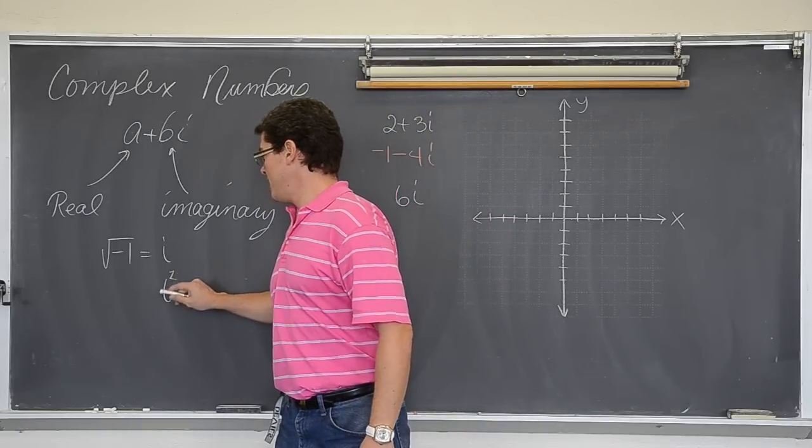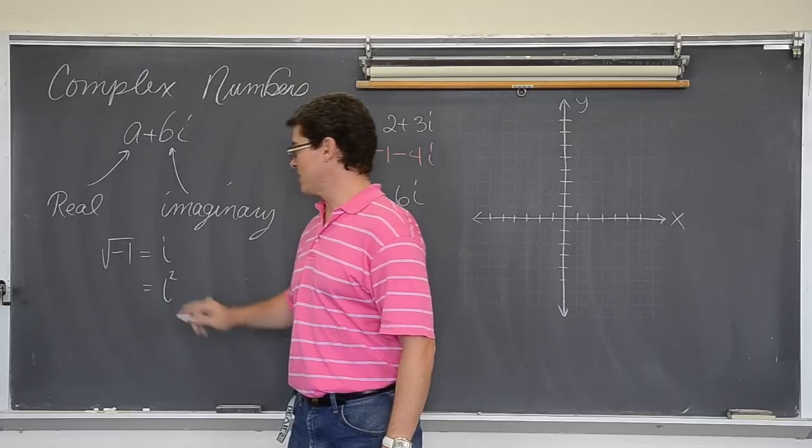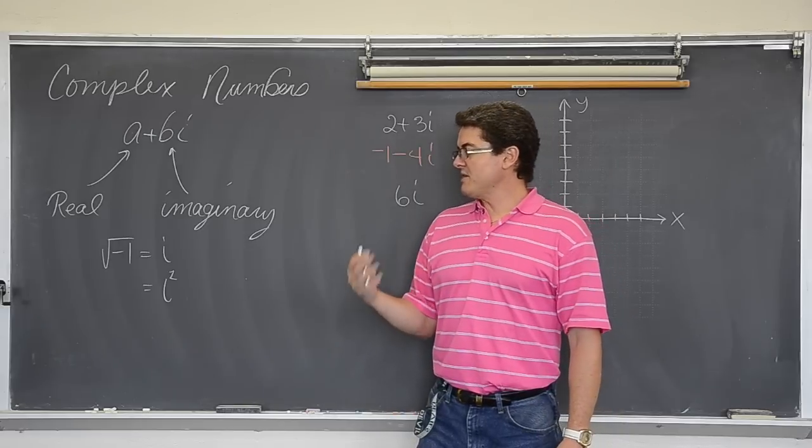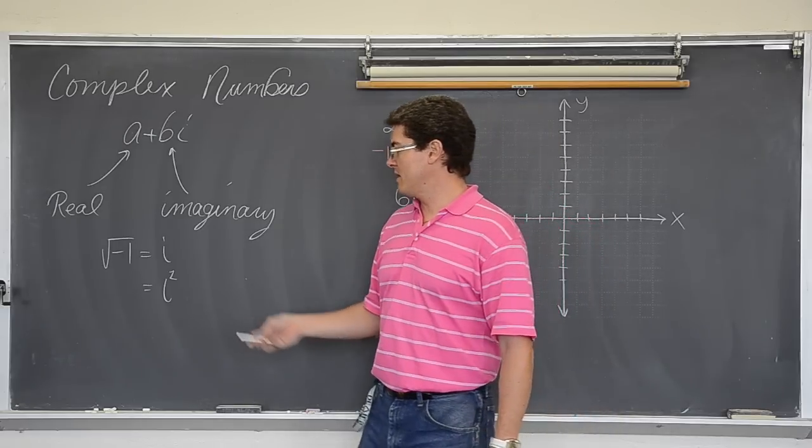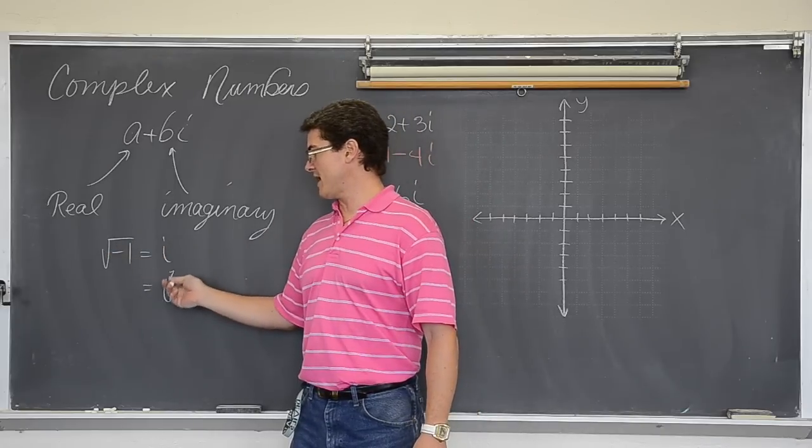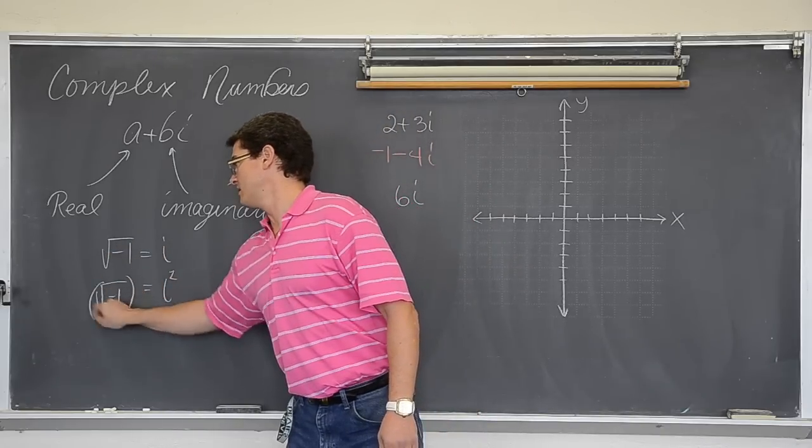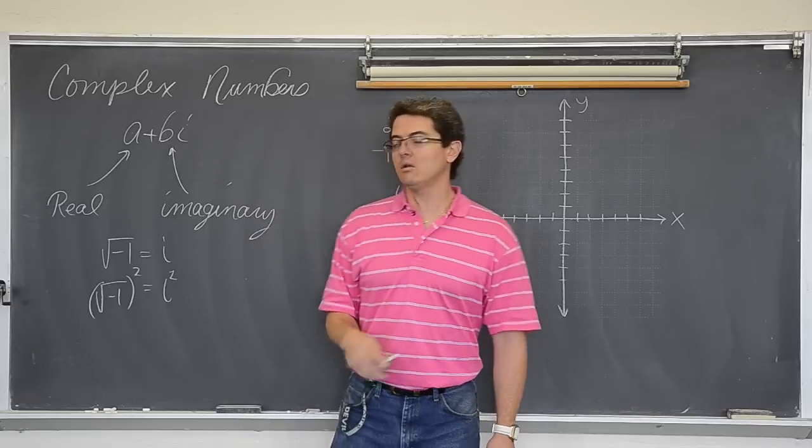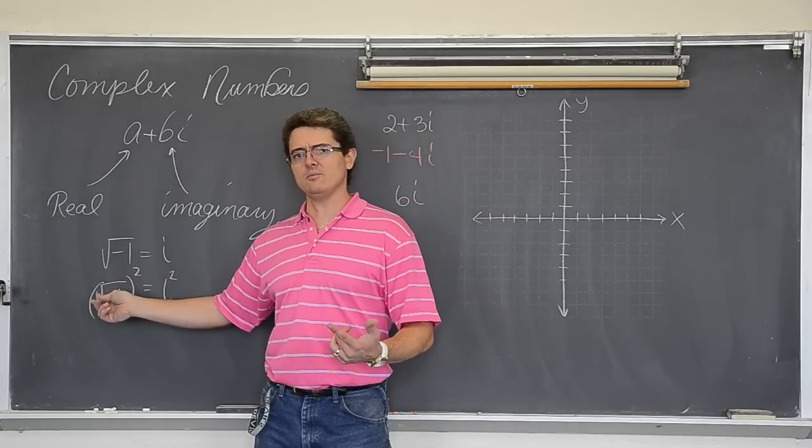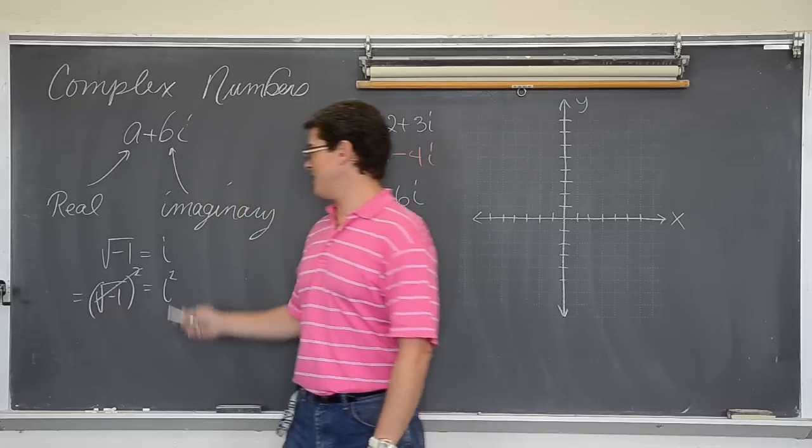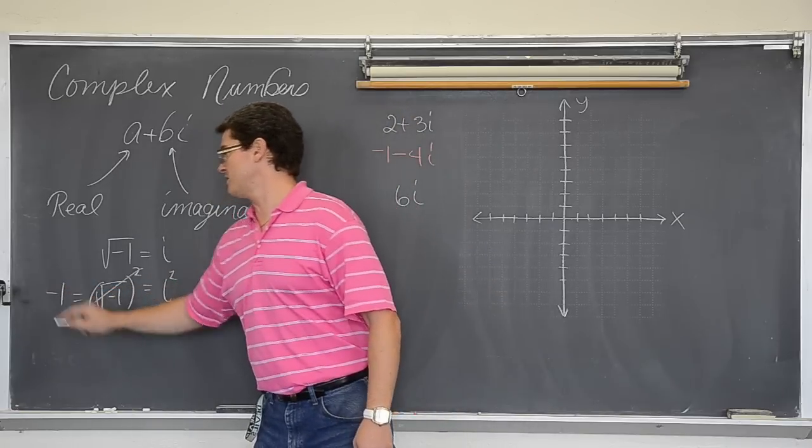Well one fact that we are going to use quite a bit today is i squared. i squared is, well just as it says, i times i, or the square root of negative one squared. Well what happens when you square a square root? Don't they cancel out? Yes they do. So those are going to cancel out and we get that i squared is equal to negative one.